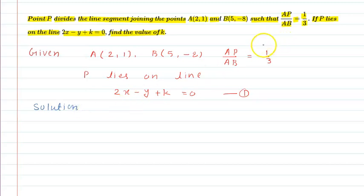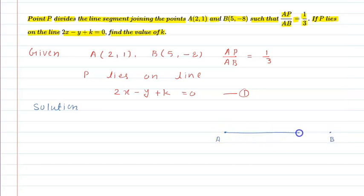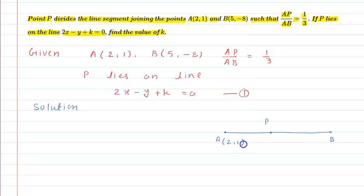Now, the ratio given — first we need to decide what kind of situation this is. So here we have point A, and here we consider point B. After joining them, a line segment is formed. Point P divides this line segment, so P will be sitting somewhere inside AB. Coordinates of A are (2, 1) and coordinates of B are (5, -8).